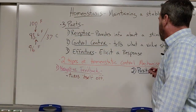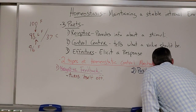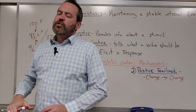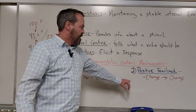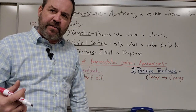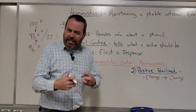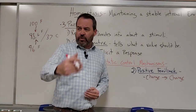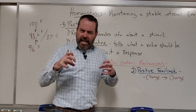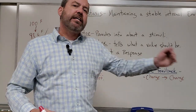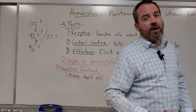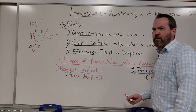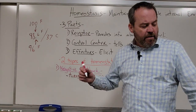With positive feedback, change stimulates further change — we're moving away from normal conditions. The example I use is childbirth: a woman goes into labor and starts contractions. At first they're not too bad and spread far apart, but as labor continues, those contractions become more and more intense and more frequent as we get closer to delivery. They will continue until that process is complete. With positive feedback, we've moved away from the normal state — change stimulates further change until the process is done.